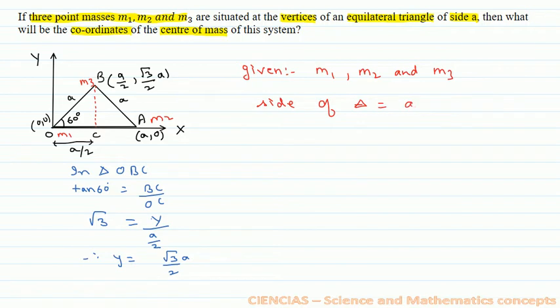Now we see the solution for this question. The formula for center of mass: the x-coordinate will be given by (m1·x1 + m2·x2 + m3·x3) divided by the total mass.